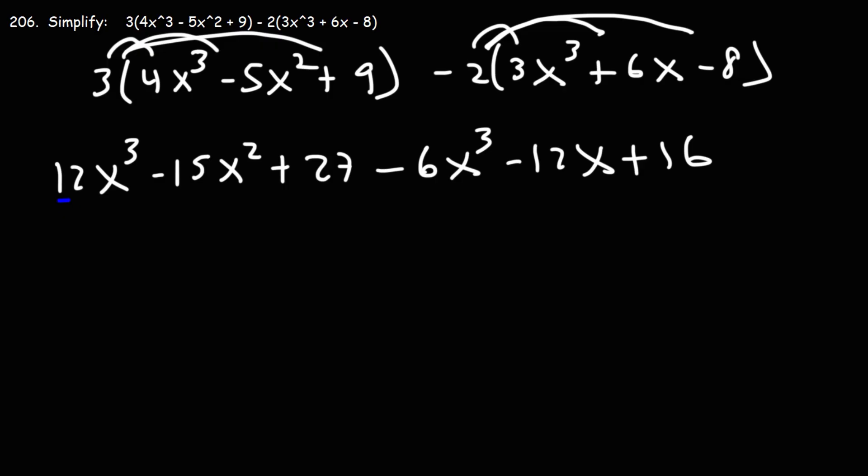Now, let's combine like terms. So we can combine those two. 12 minus 6 is 6, so that's going to be 6x cubed.